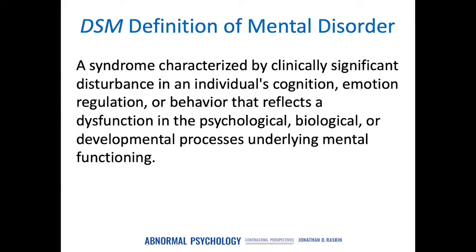And so this brings us to the current version of the manual, the DSM-5, which was published in 2013 after a long development process that was riddled with controversy. The DSM-5 defines mental disorders as syndromes characterized by clinically significant disturbances in an individual's cognition, emotion regulation, or behavior that reflects a dysfunction in the psychological, biological, or developmental processes underlying mental functioning. So according to this definition, mental disorders are internal dysfunctions that people have.